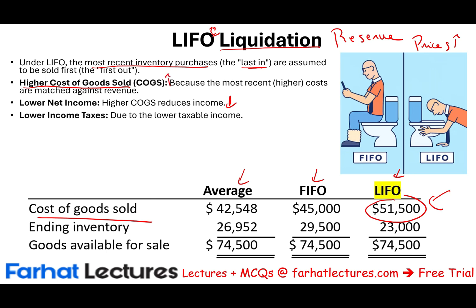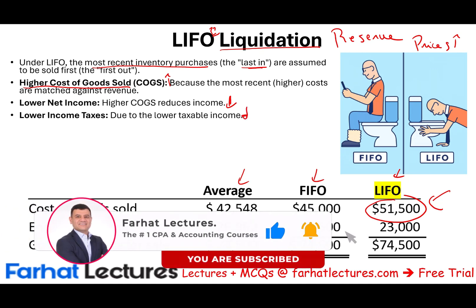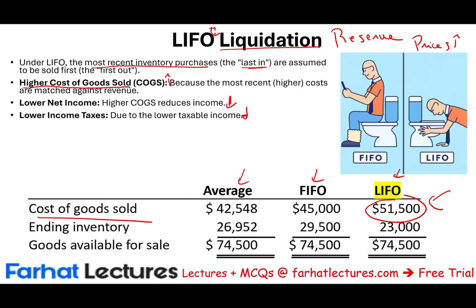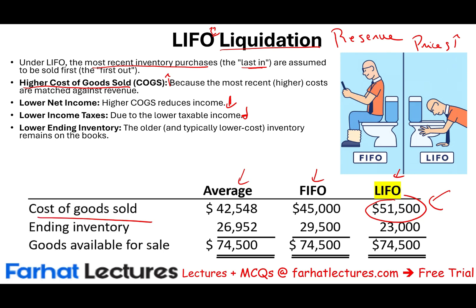Because cost of goods sold is the highest, it reduces net income to the lowest, and for tax purposes you have a lower tax bill. All good so far — the company is using LIFO to save taxes and it's serving that purpose. But now pay attention to the inventory figure under LIFO: it is the lowest. Not because they have less inventory, but because the cost of that inventory is old, and old inventory has a low cost since costs are rising.